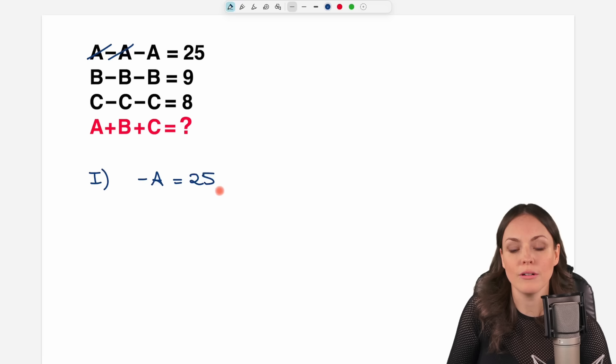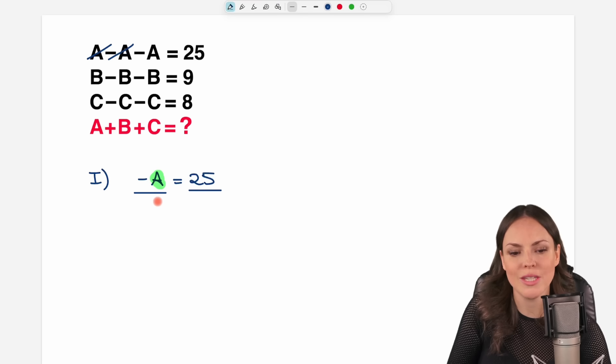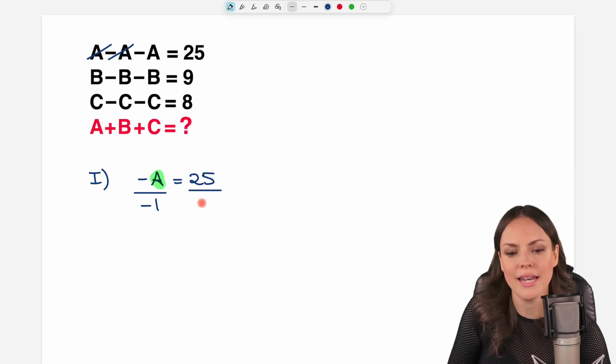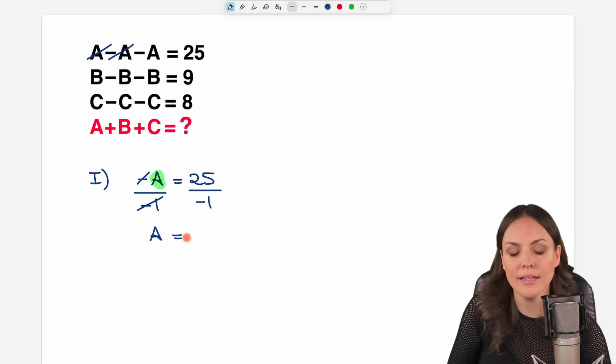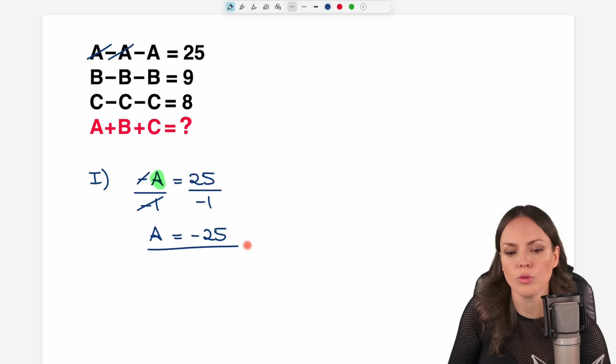We can solve this equation for A now. We just have to get rid of the minus here. So let's divide both sides of the equation by negative 1. This cancels out and only my A is left. 25 over negative 1 is negative 25. So we've already found our A.